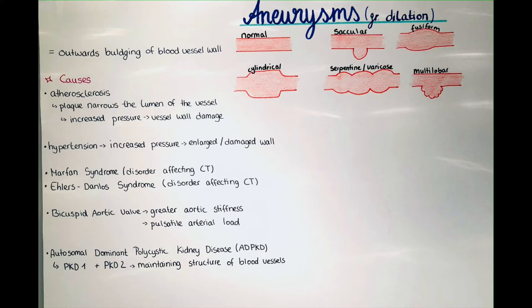Hypertension — increased blood pressure over 120/80 — can also lead to an aneurysm. It usually has to be severe hypertension, which can then enlarge and weaken the vessel wall.